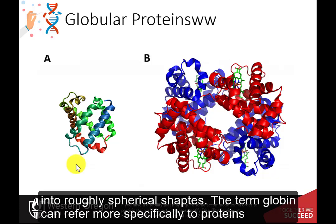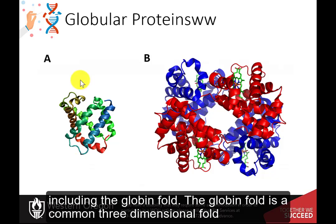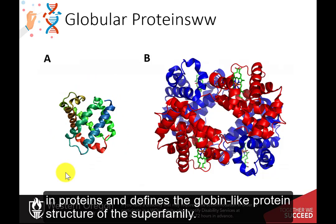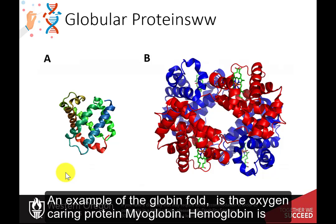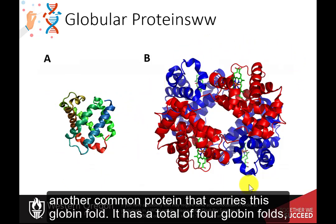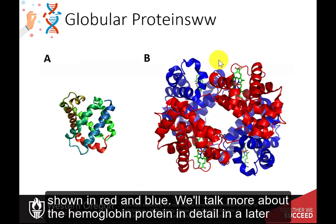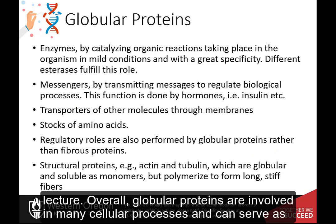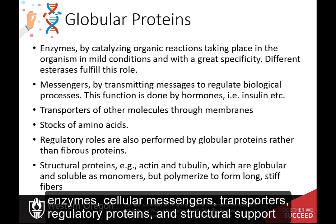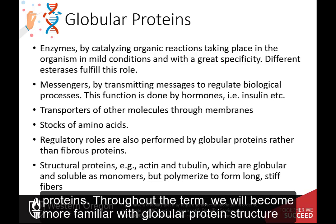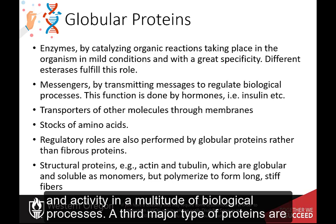The term globin can refer more specifically to proteins including the globin fold, a common three-dimensional fold that defines the globin-like protein structure of this superfamily. An example of the globin fold is the oxygen-carrying protein myoglobin. Hemoglobin is another common protein carrying this globin fold, with a total of four globin folds. Overall, globular proteins are involved in many cellular processes and can serve as enzymes, cellular messengers, transporters, regulatory proteins, and structural support proteins.